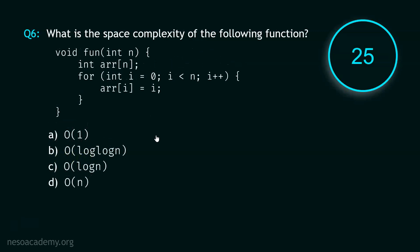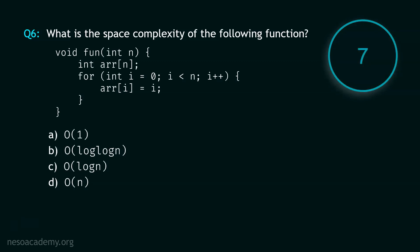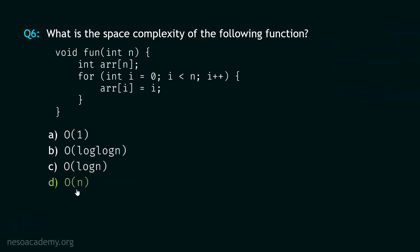Now let's move to question number 6, and your time starts now. Stop. The correct option is option D — Big O of N. We have been asked to find the space complexity of this function. We just need to know how much space is required for this array ARR. I hope you got the correct answer, which is Big O of N.